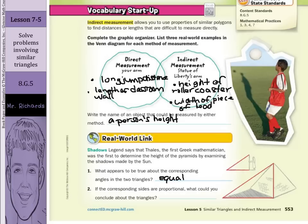And if the corresponding sides are proportional, what could you conclude about the triangles? If we have equal corresponding angles and proportional sides, we could say that they are similar. And using that property and the properties we've learned about similar triangles, we can use those to have direct measurement methods.